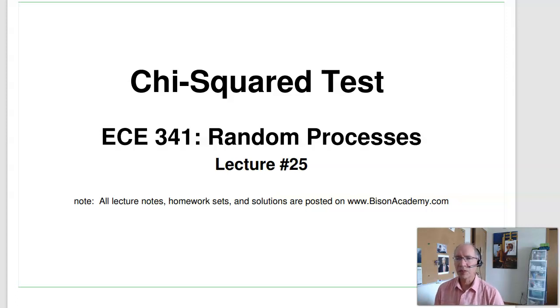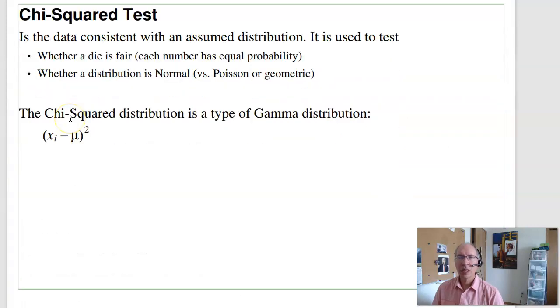Welcome to lecture number 25 for ECE 341, Random Processes. In this lecture, we look at the chi-squared test. A chi-squared test is a test to see if your data is consistent with an assumed distribution.